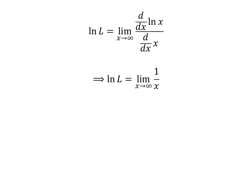As the derivative of natural log of x is 1 upon x, and the derivative of x with respect to x is 1, natural log of L is equal to the limit of 1 upon x as x approaches infinity. Since 1 upon infinity is 0, natural log of L is equal to 0.